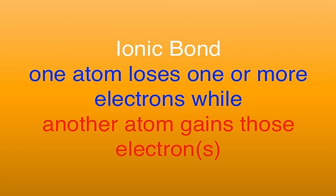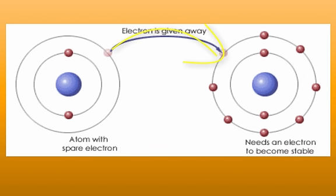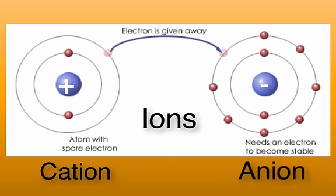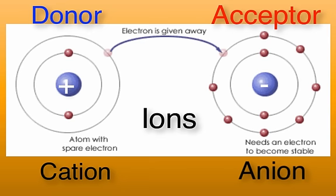An ionic bond occurs when one atom loses one or more electrons while another atom gains the same one or more electrons. The atom that loses its electrons also loses the negative charge those electrons carried and will become more positive — this atom is now called a cation. The atom that gains the negatively charged electrons becomes more negative and is now called an anion. The positively charged cation and the negatively charged anion are called ions due to their charges. The cation is considered an electron donor, and the anion is considered an electron acceptor. The attraction between the cation and the anion draws the two ions together.